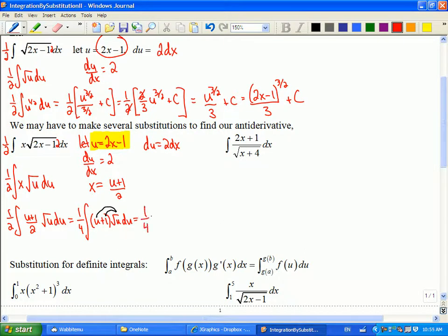So if I do that and distribute, I'd have 1 quarter. That's 1 half plus 1. This will be u to the 3 halves, and then u to the 1 half, du. So now I just have a power rule problem to solve. So this will be 1 quarter u to the 5 halves divided by 5 halves, plus u to the 3 halves divided by 3 halves, and a constant.